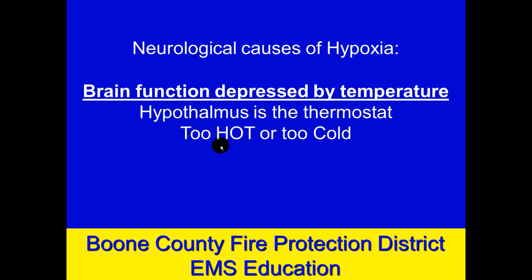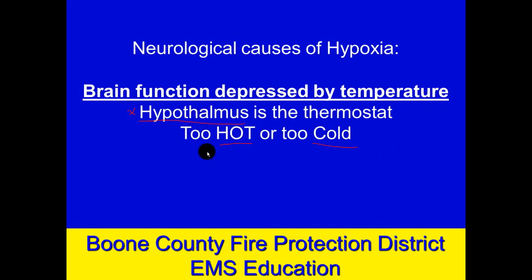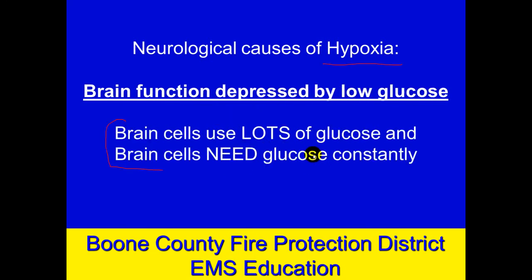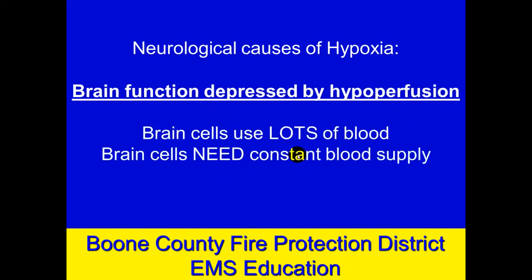The same applies to temperature. Whether it's heat stroke or hypothermia — whether the brain is too hot or too cold — the brain doesn't function well and doesn't do its controlling well. The thermostat for your body is the hypothalamus, located in the brain. Environmental causes or fever, increased or decreased temperature, can cause the entire body temperature regulation mechanism to not work well.